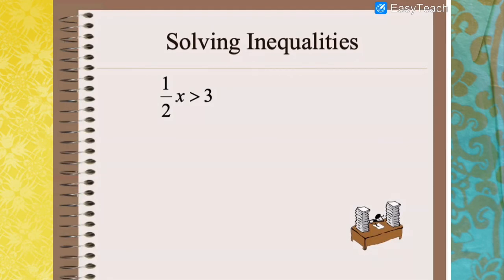A few more examples in solving inequalities. If you have one-half x greater than 3: since x is being divided by 2 on the left side, transfer 2 to the other side — it will be multiplied. So x greater than 3 times 2, therefore x is greater than 6.